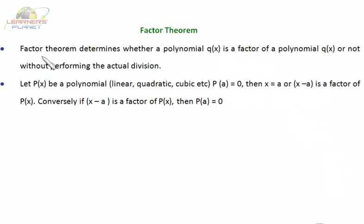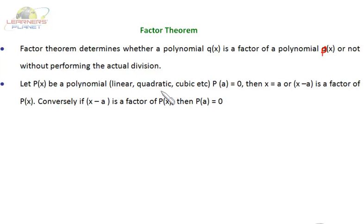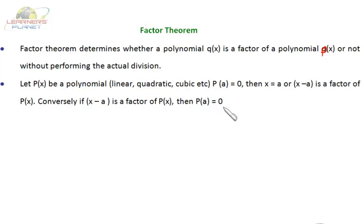Let's discuss the factor theorem. Factor theorem determines whether a polynomial q(x) is a factor of polynomial p(x) or not, without performing the actual division. Let p(x) be a polynomial — linear, quadratic, cubic, or nth degree. If p(a) = 0, that means x = a, or equivalently (x - a) is a factor of p(x). Conversely, if (x - a) is a factor of p(x), then p(a) = 0.